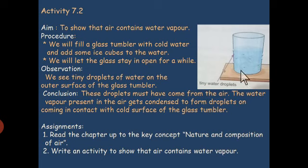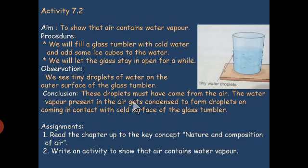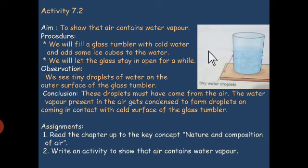After some time, we will see that tiny water droplets have appeared on the outer surface of the glass tumbler. These droplets have come from the atmosphere — the water vapor present in the air gets condensed to form tiny droplets when it comes into contact with the cold surface of the glass tumbler.